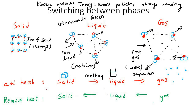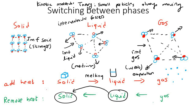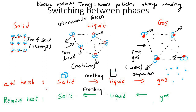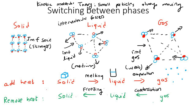If you have liquid water and put it in the freezer to turn it into a block of ice, that is called freezing. And if you have a gas and convert it into a liquid, that is called condensation. That's all for this lesson — hope that was helpful!